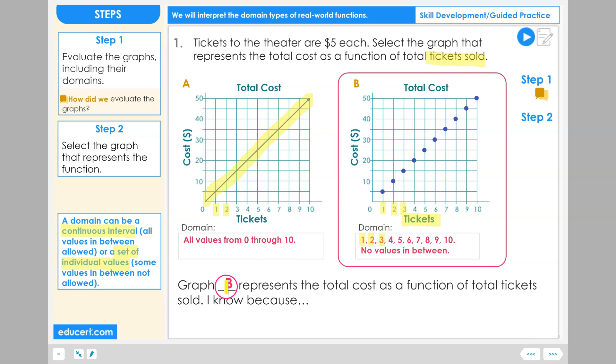Graph B represents the total cost as a function of tickets sold. I know because the domain for buying tickets is 1, 2, 3, 4, etc. We cannot buy half a ticket so in between values like 1 and a half, 2 and a half are not in the function.